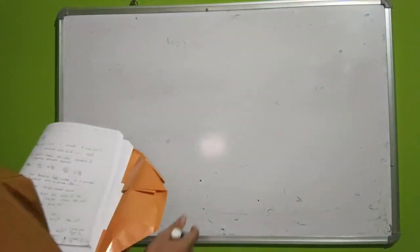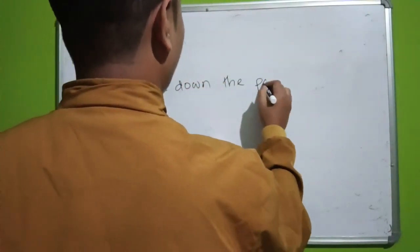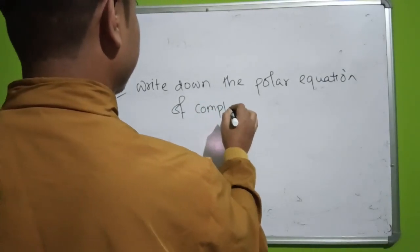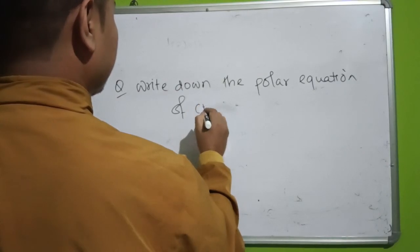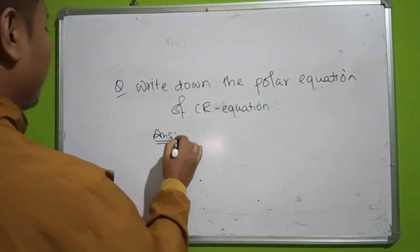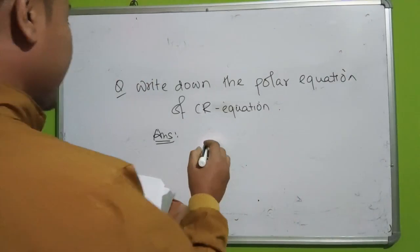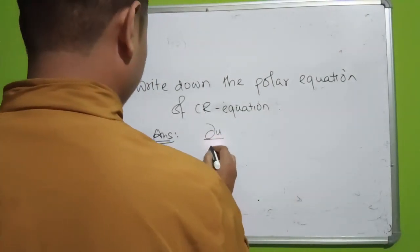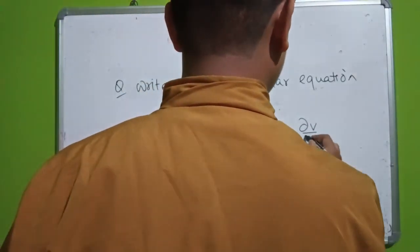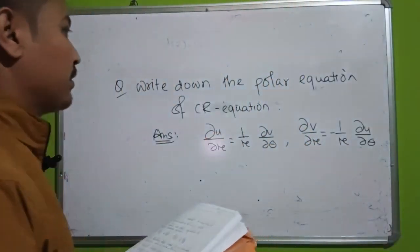Next problem: write down the polar form of the Cauchy-Riemann equations. The polar form of the CR equations is: ∂u/∂r = (1/r) ∂v/∂θ, and ∂v/∂r = -(1/r) ∂u/∂θ. This is the polar form of the Cauchy-Riemann equations.